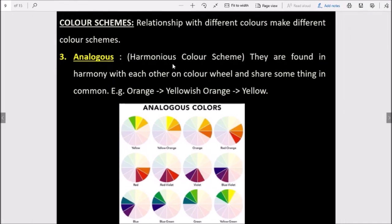Third is analogous. Analogous are harmonious color schemes. They are found in harmony with each other on a color wheel.